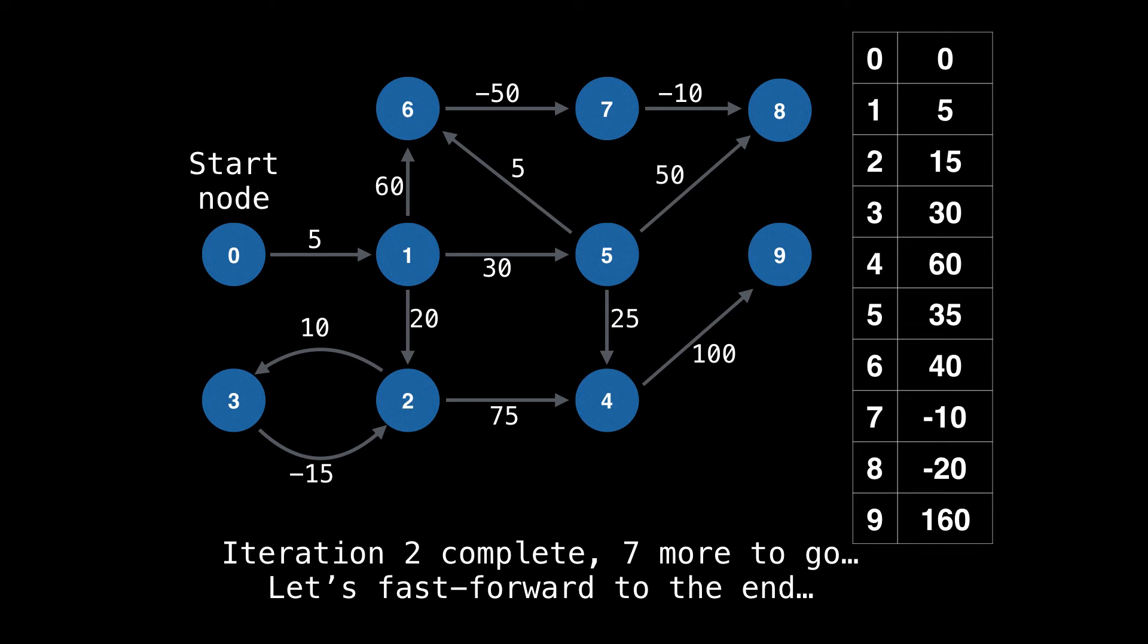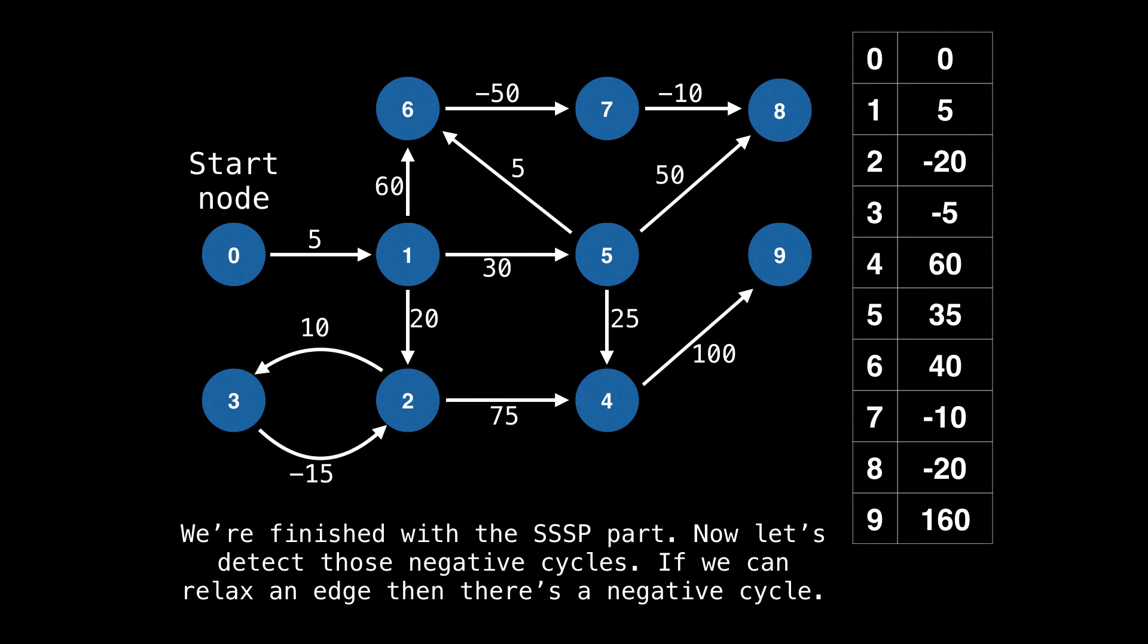So that's the end of the second iteration. If we fast forward to the end, here's the resulting distance array. However, we're not done, we still need to find the negative cycles.